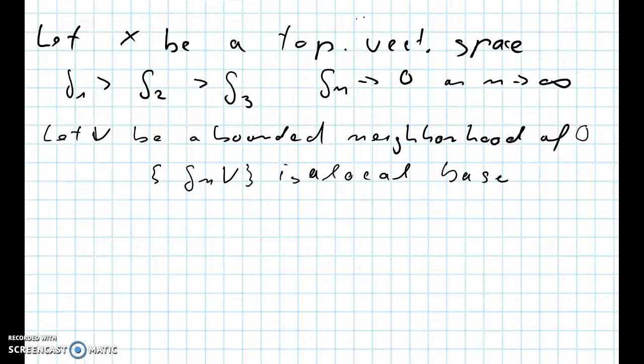To prove this statement we will use the fact that the topology on our topological vector space is translation invariant, and thus to show that we have a local base, it is enough to show that we have a local base at zero. So let's prove that we have a local base at zero.